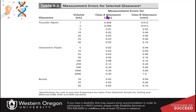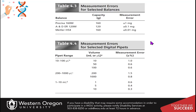There is Class A and Class B glassware. Class B glassware is not as accurate as Class A; you'll create less measurement error using Class A. Class B is cheaper, however. Similarly, instruments like balances and digital pipettes also have a stated error range.